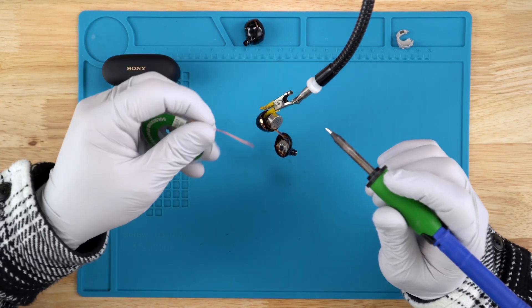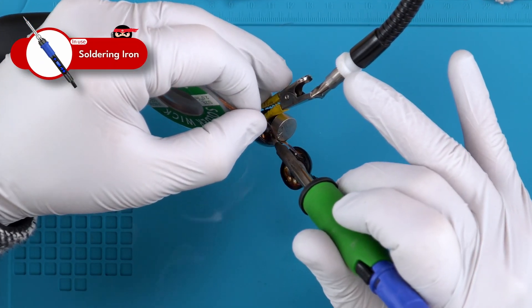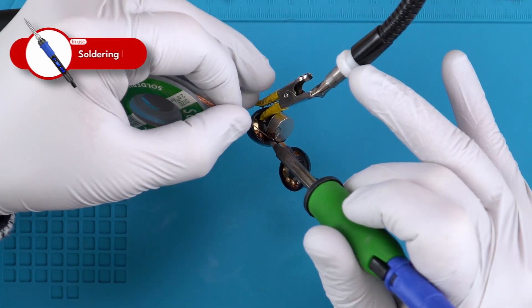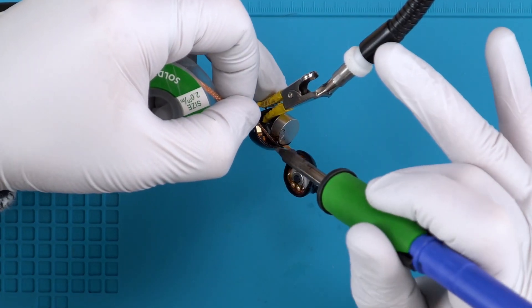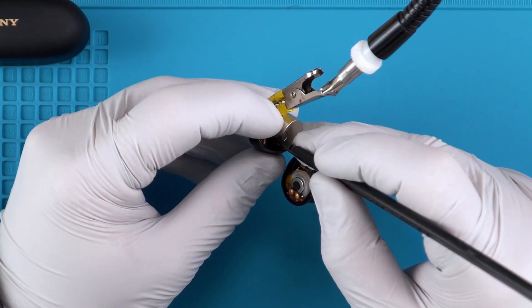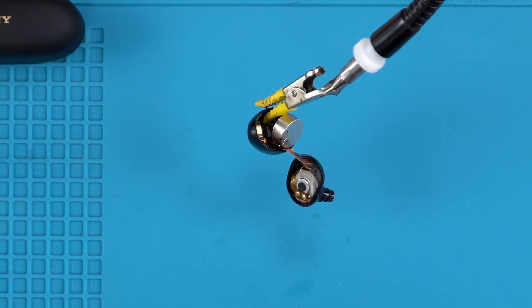All right, now I'm gonna pull out some of the solder with the solder wick here and the soldering iron. Looks like we have a little bit left there.